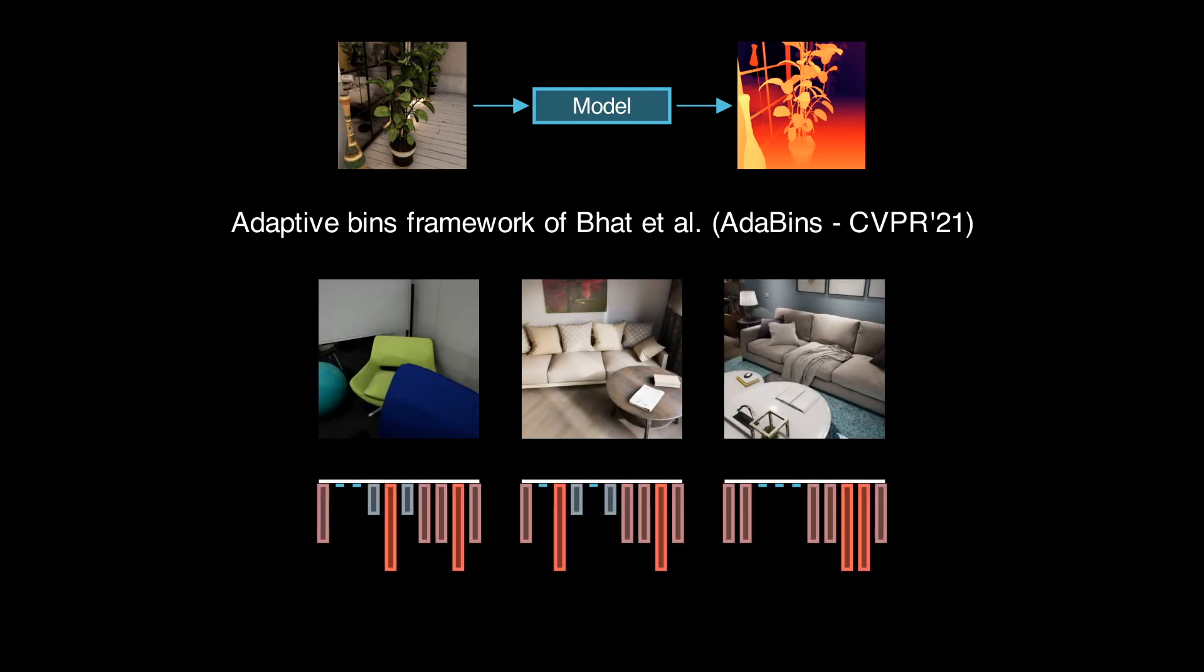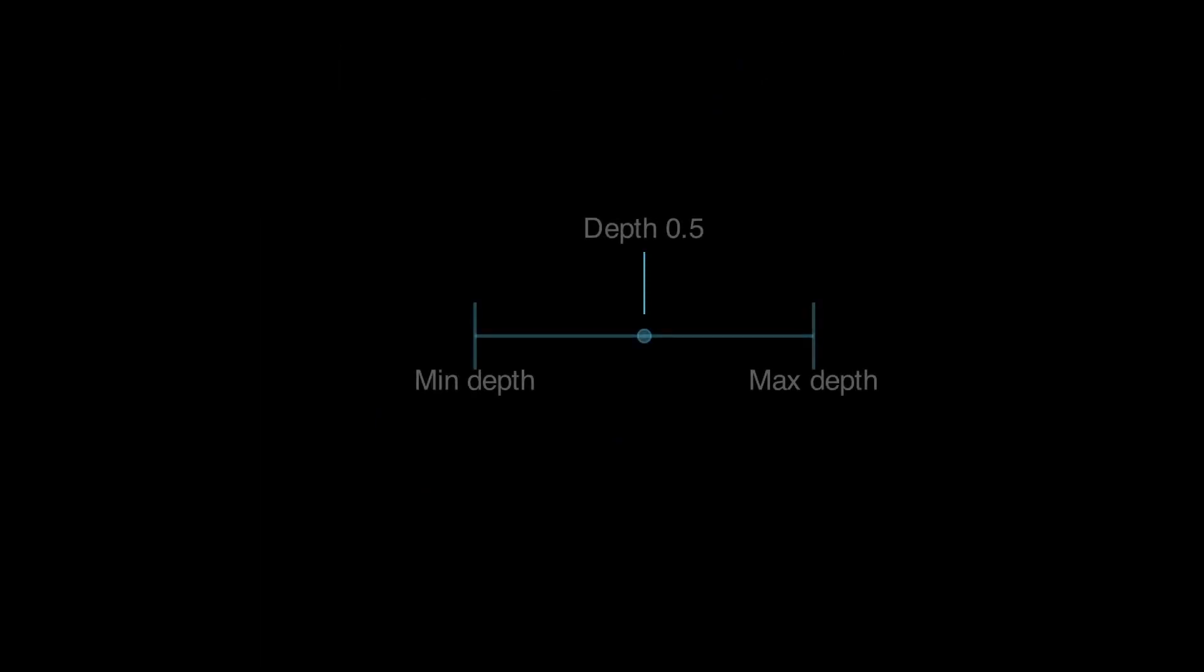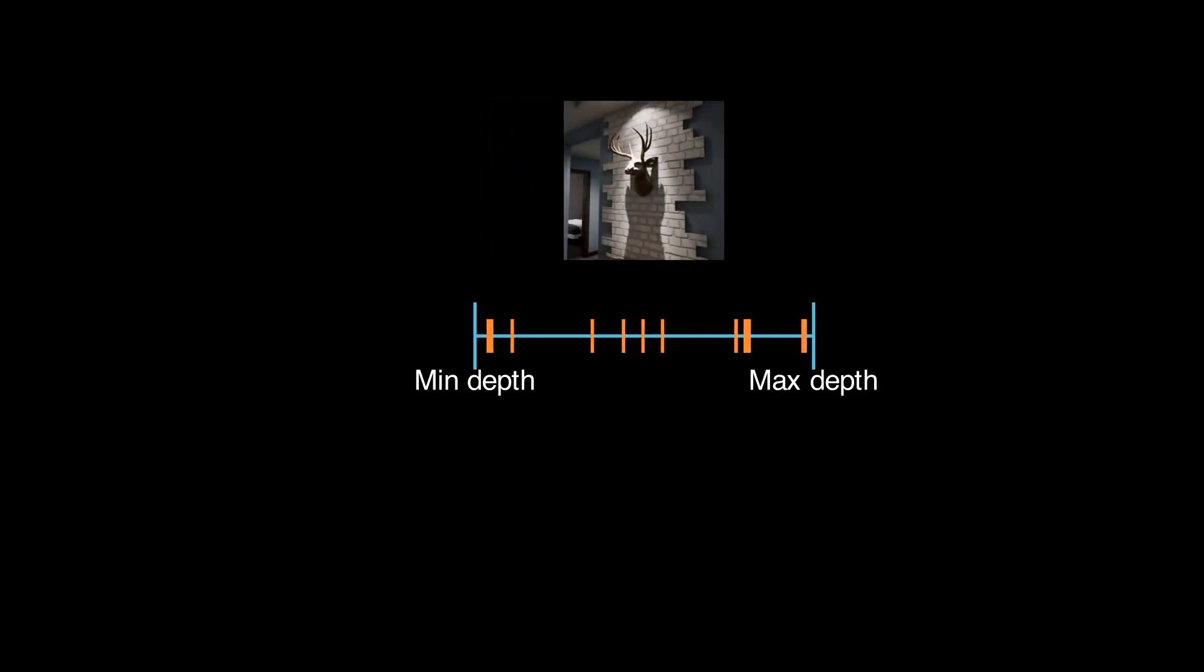They noted that the distribution of the depth values vary extremely from one scene to another, making depth estimation an even harder problem. To tackle this problem, AdaBins divides the continuous depth interval into discrete bins and lets the bin centers vary from image to image.